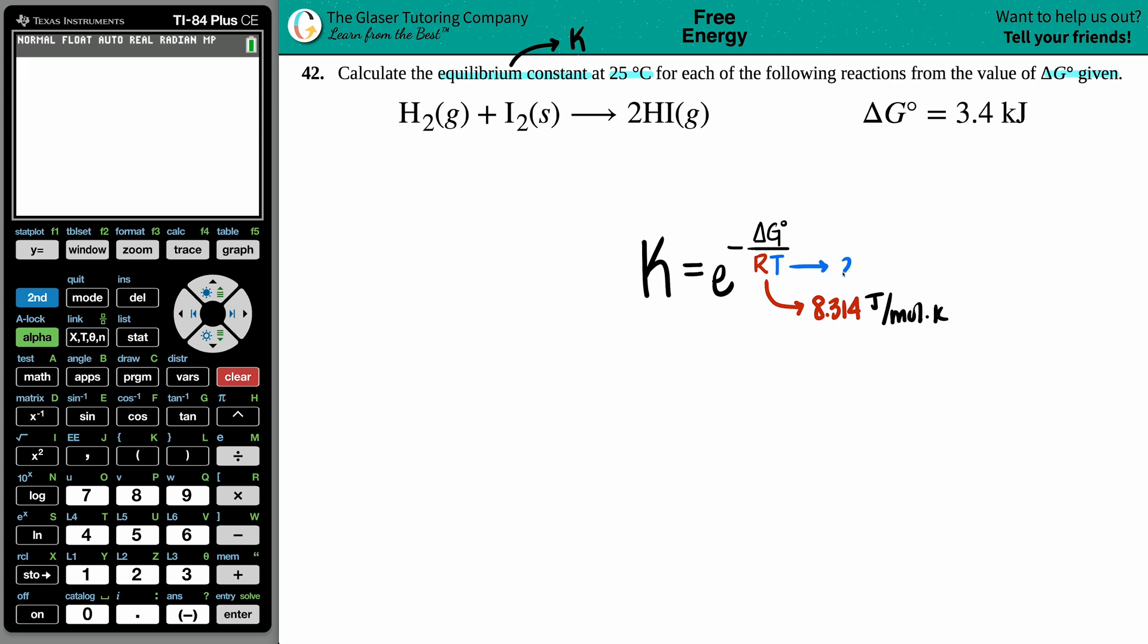Since the R value is in Kelvin and they gave me the temperature in Celsius, I have to convert 25 degrees Celsius into Kelvin. From Celsius to Kelvin, that's plus 273.15. 25 degrees is room temp, so you get 298.15 Kelvin.